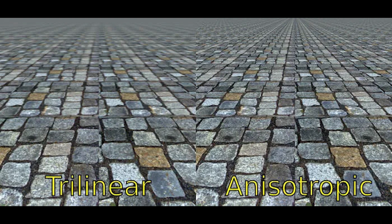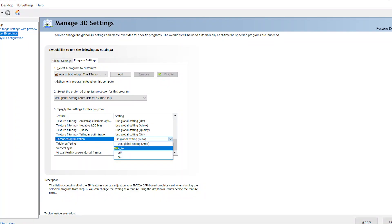Texture Filtering is related to anisotropic filtering and broadly improves the appearance of flat textures during gaming. If you're suffering a performance impact because of anisotropic filtering, you could try turning on anisotropic sample optimization. Negative LOD Bias is only really useful for OpenGL games and doesn't offer anything that anisotropic filtering doesn't do better. Instead of using trilinear optimization, just set texture filtering to High Quality or High Performance depending on how powerful your system is.